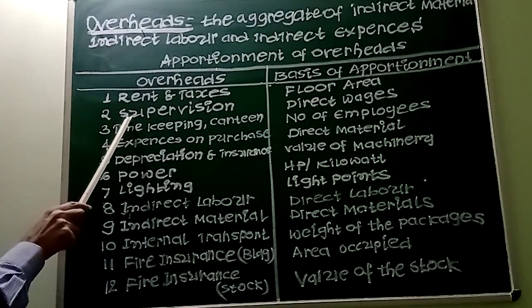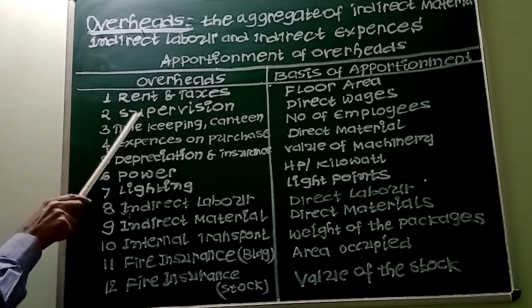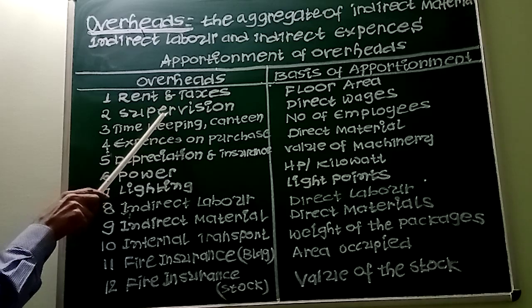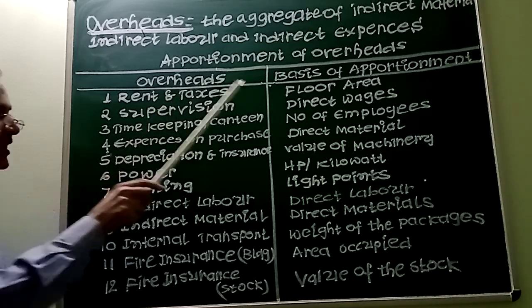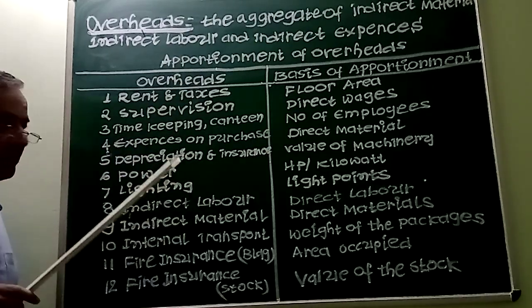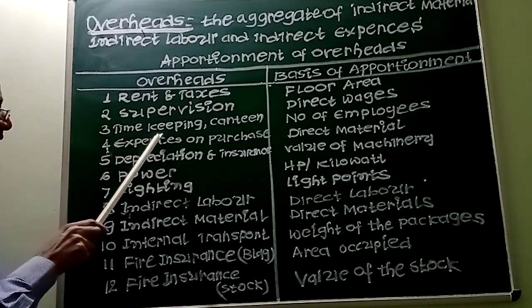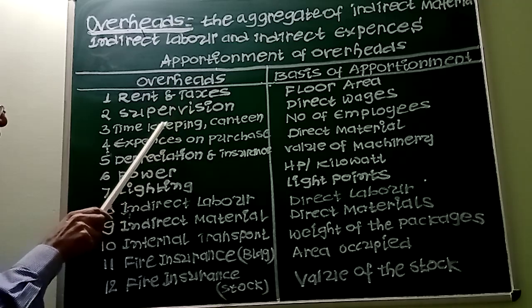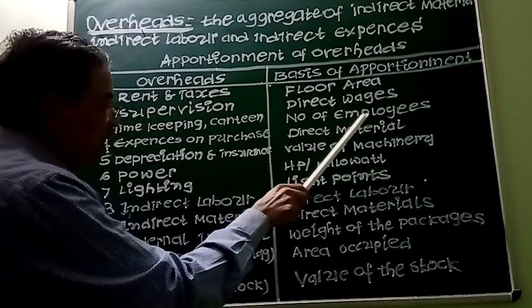Second important overhead is supervision, which can be apportioned on the basis of direct wages. Next, timekeeping and canteen expenses can be apportioned on the basis of number of employees.